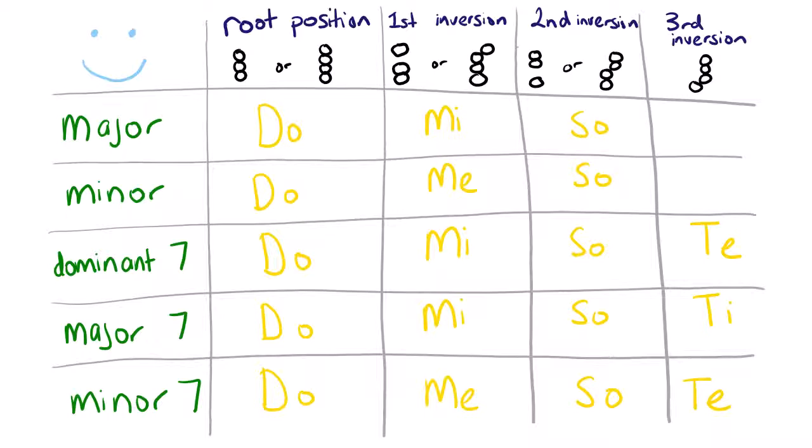Here's a summary of all the things you need to know for this unit. On this side we have the types of chords, the five types of chords you need to know.